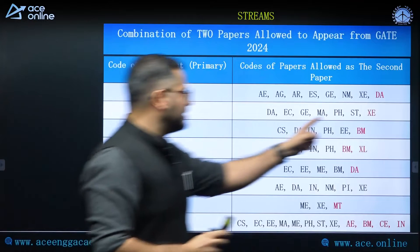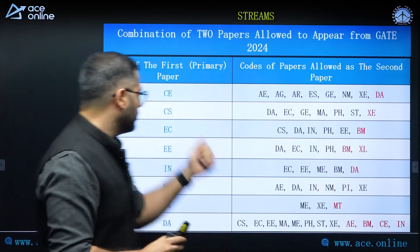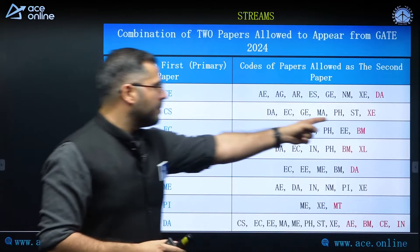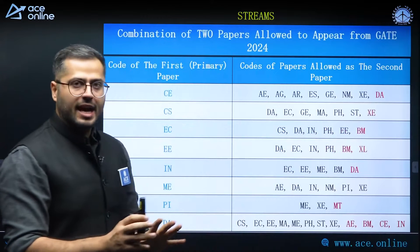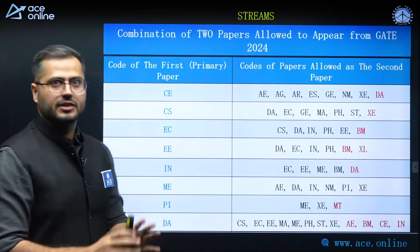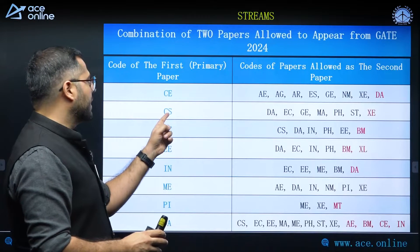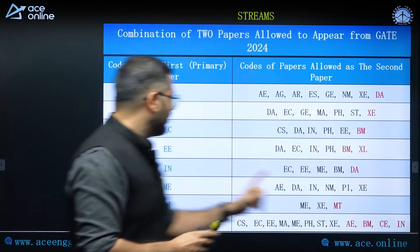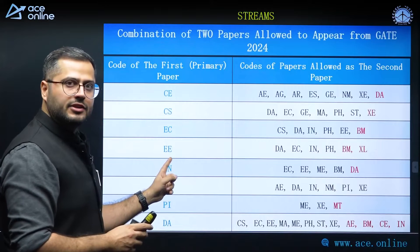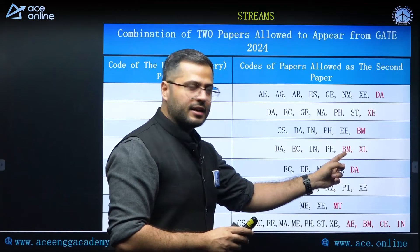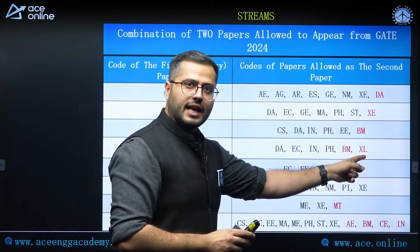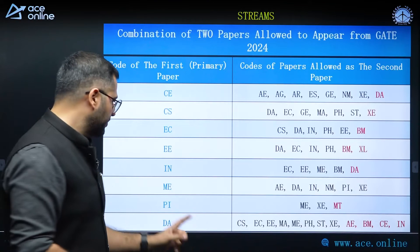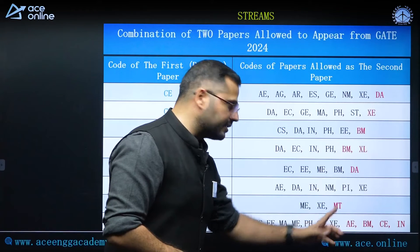They have also added XE — Engineering Sciences — as a stream for CS students. Previously, the XE paper was only applicable for civil engineering and mechanical engineering students, but now it is applicable for CS students as well. They have added biomedical engineering for EC students as well as electrical engineering students, and additionally life sciences for electrical engineering. For production engineering, they have added metallurgical engineering as a new subject.